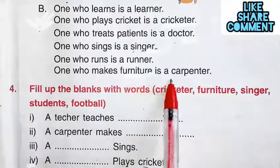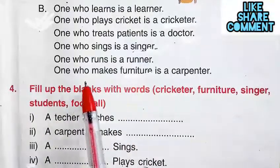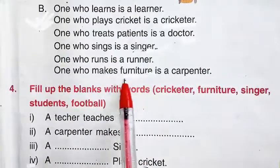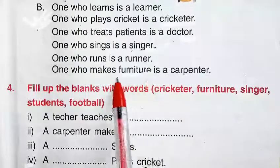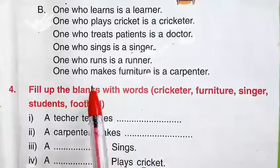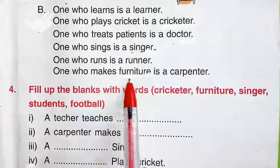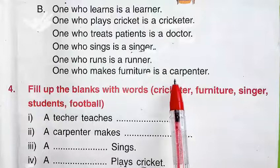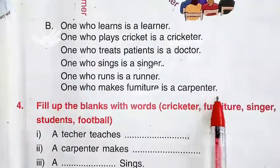Next: one who makes furniture is a carpenter. Furniture means asbap homo — one who makes furniture is a carpenter.